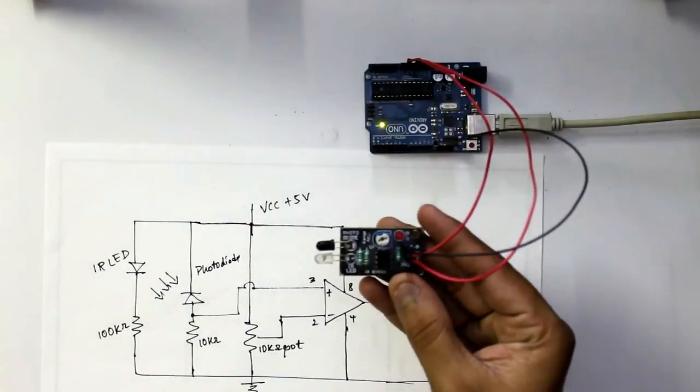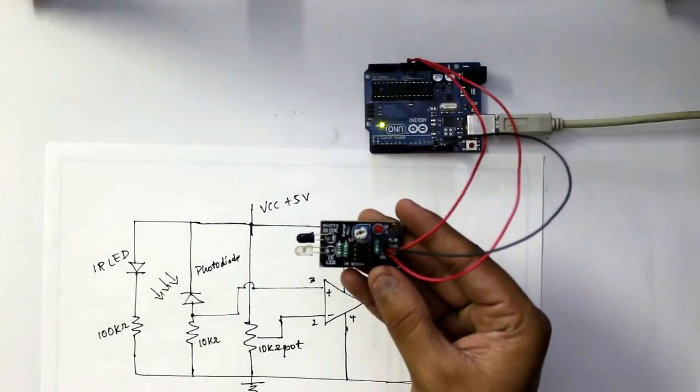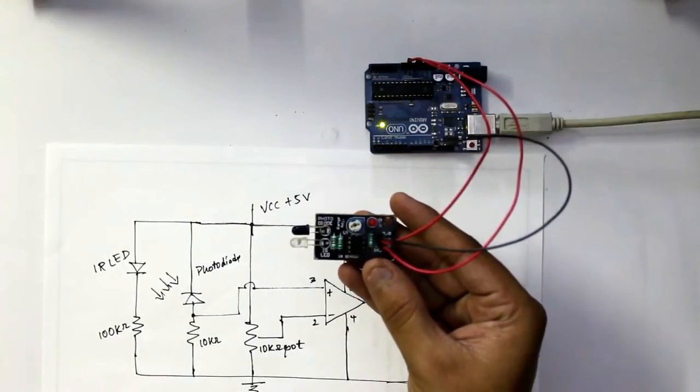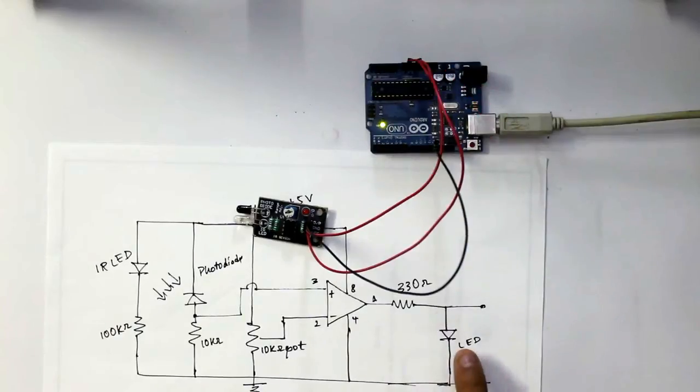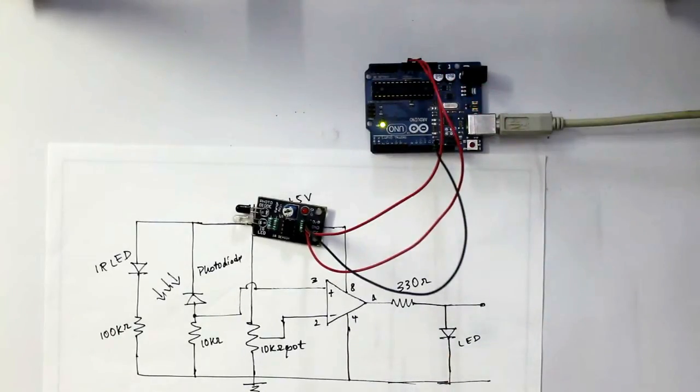The device is now powered on. The IR LED is emitting IR radiations, but the photodiode is not detecting it. This LED is not glowing, which indicates that the output is low.